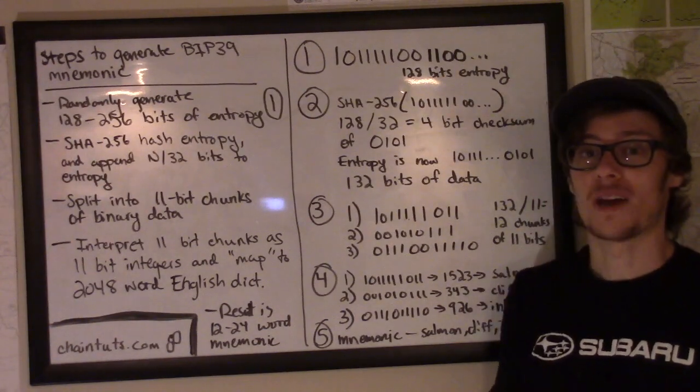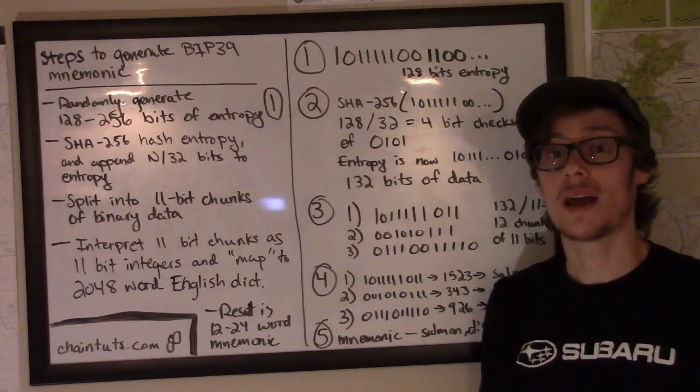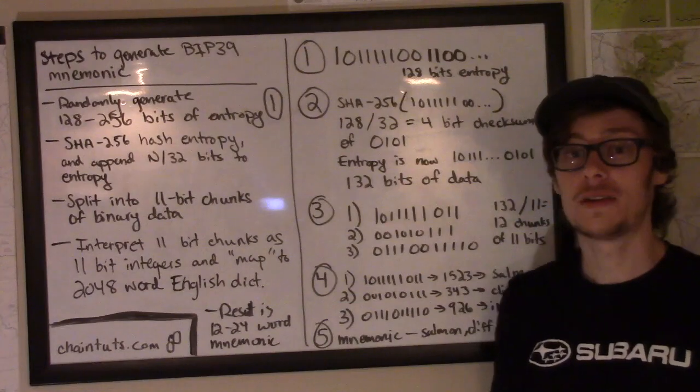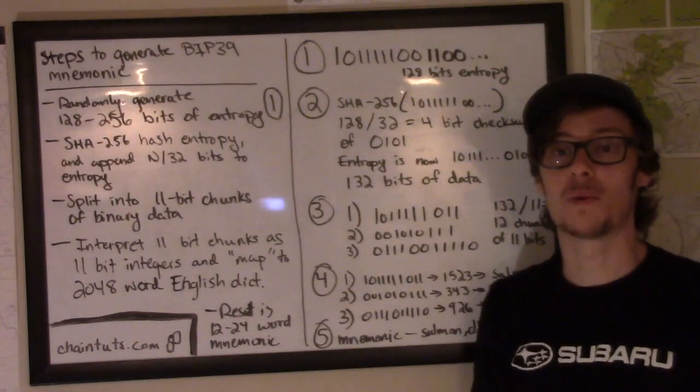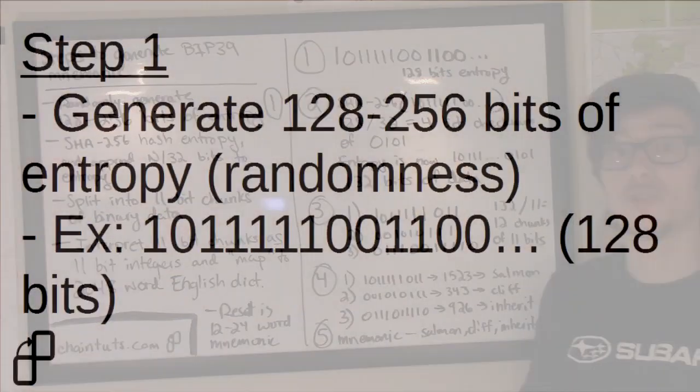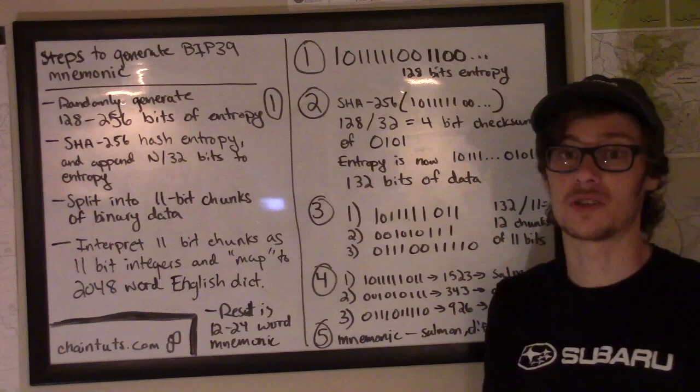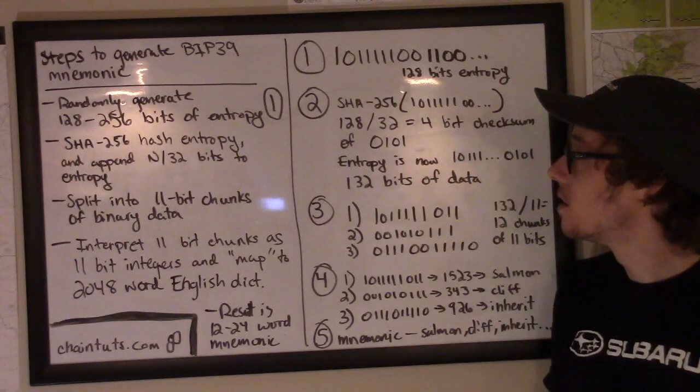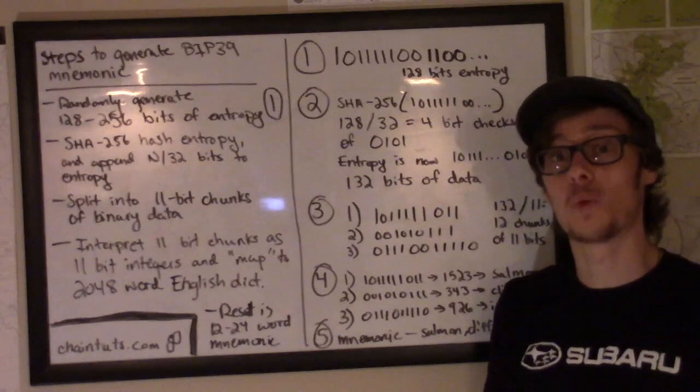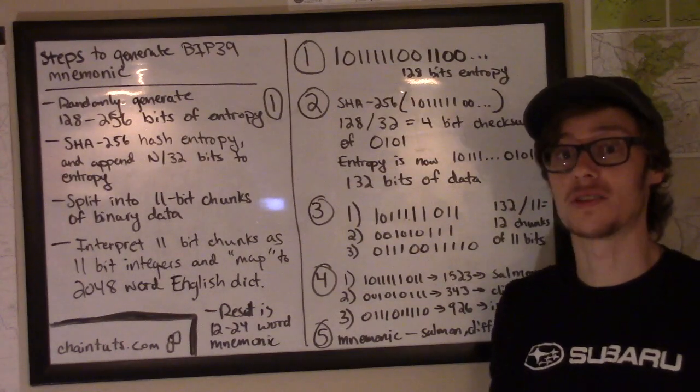So what are the steps to generate a BIP39 mnemonic? Well first we have to remember that the seed used to generate hierarchical deterministic wallets are indeed random values because they're private keys, we want them to be secure. So the first thing that we do is generate 128 to 256 bits of entropy. Entropy is randomness, random values. It's a number that hopefully is generated using a cryptographically secure algorithm. So for example, if we want to generate a 12-word mnemonic backup, we would generate 128 bits of entropy as our seed to start with.